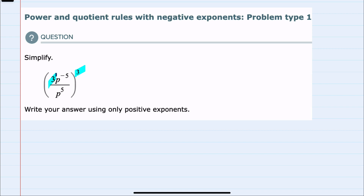It has an exponent of 1. I would need to multiply by the 3 exponent outside, and I could rewrite this as 3 to the 3rd power. Then for the p⁻⁵, a power on the inside and a power on the outside will get multiplied to be p⁻⁵ times 3, which is p⁻¹⁵. And then in the denominator,